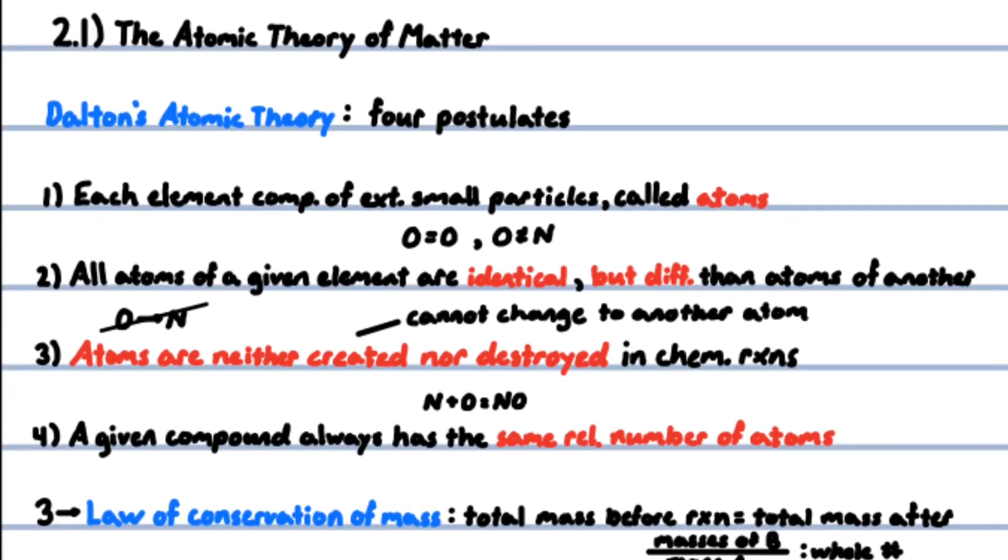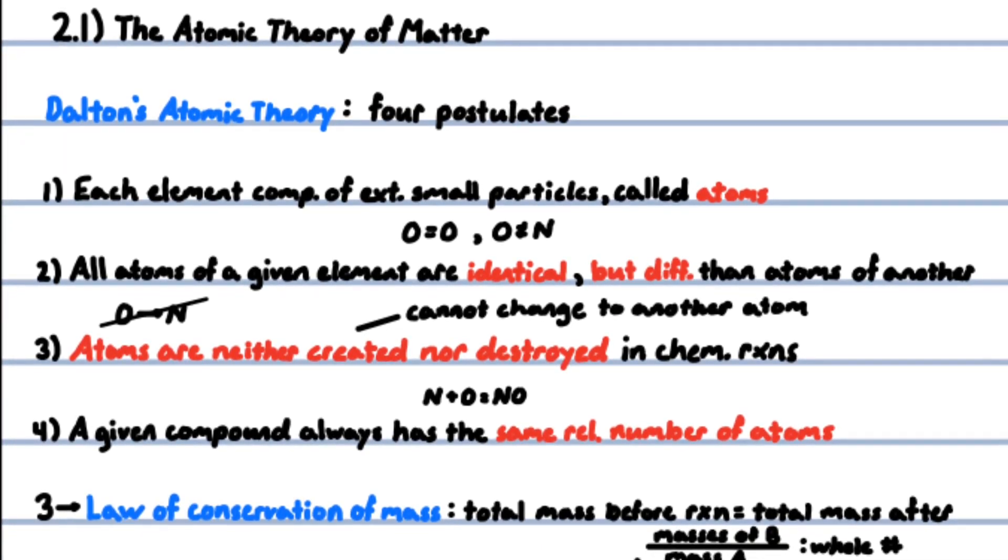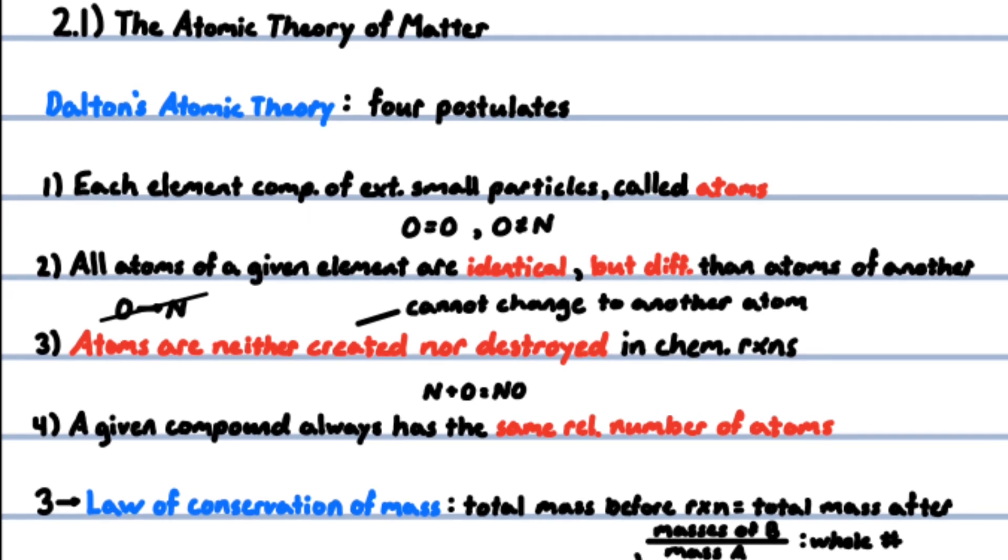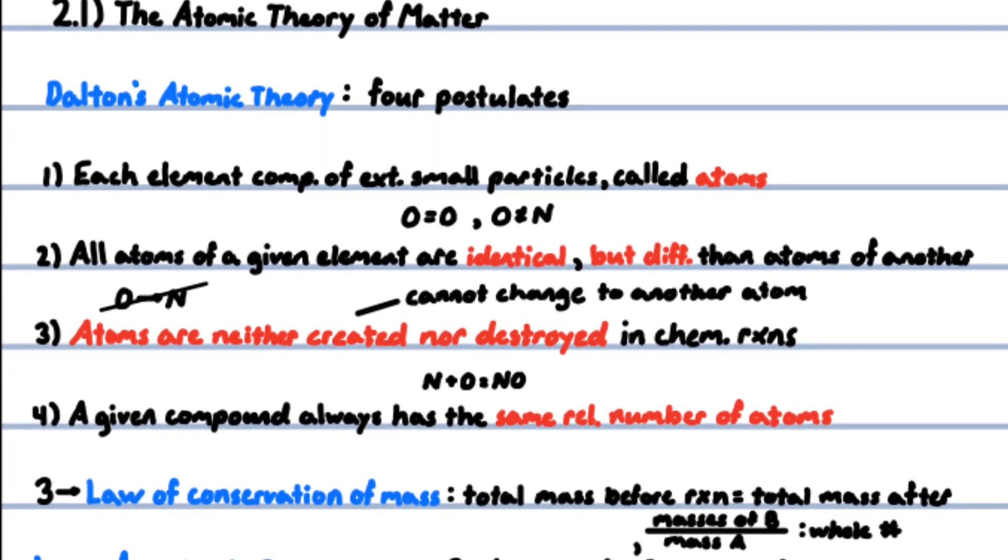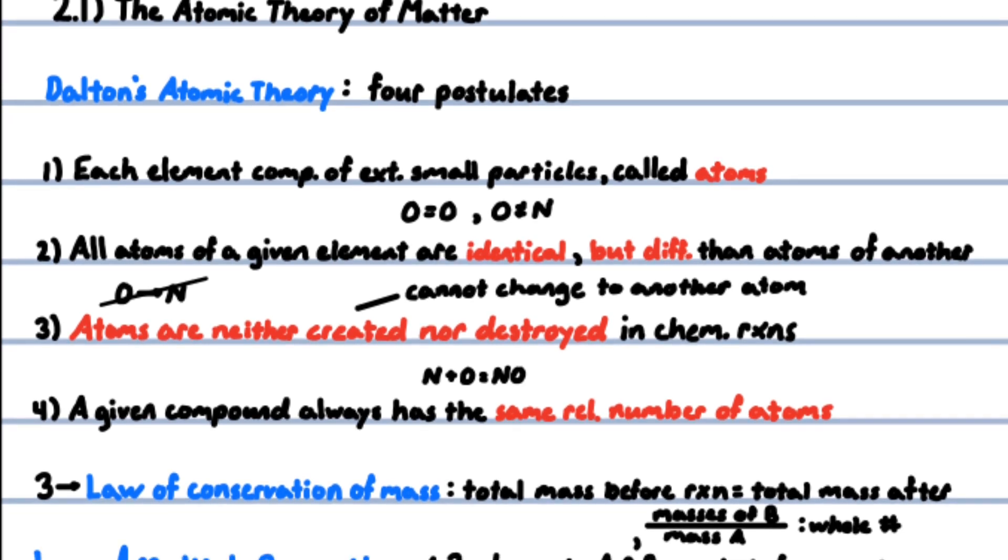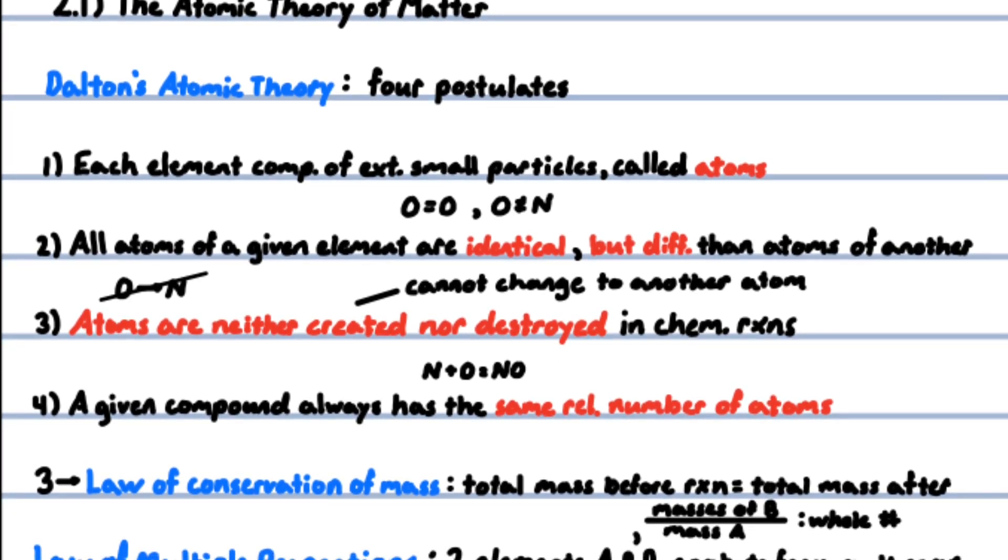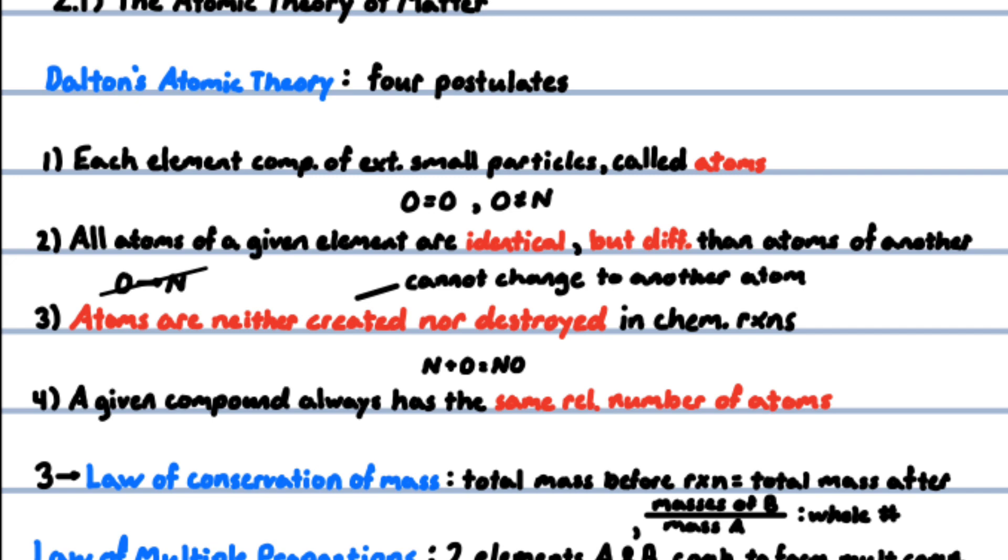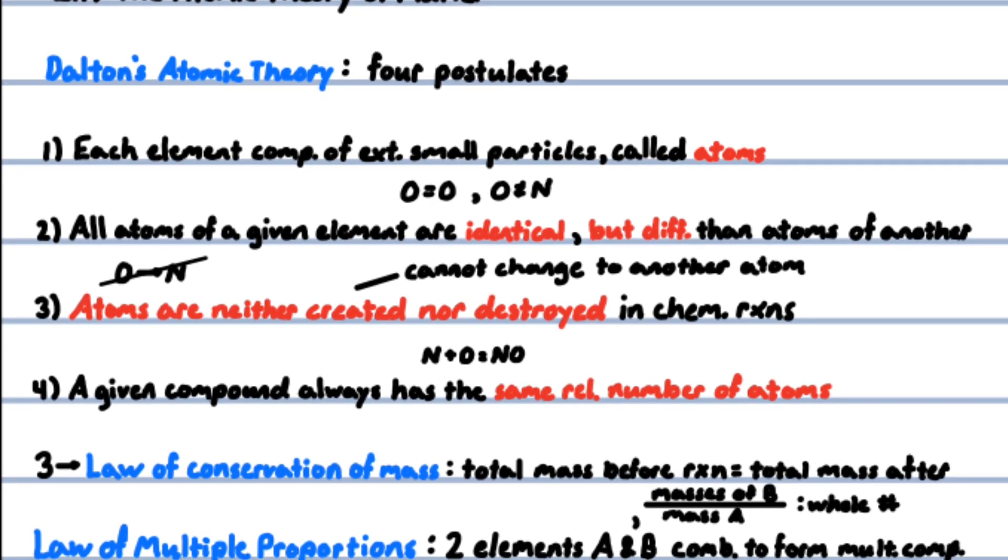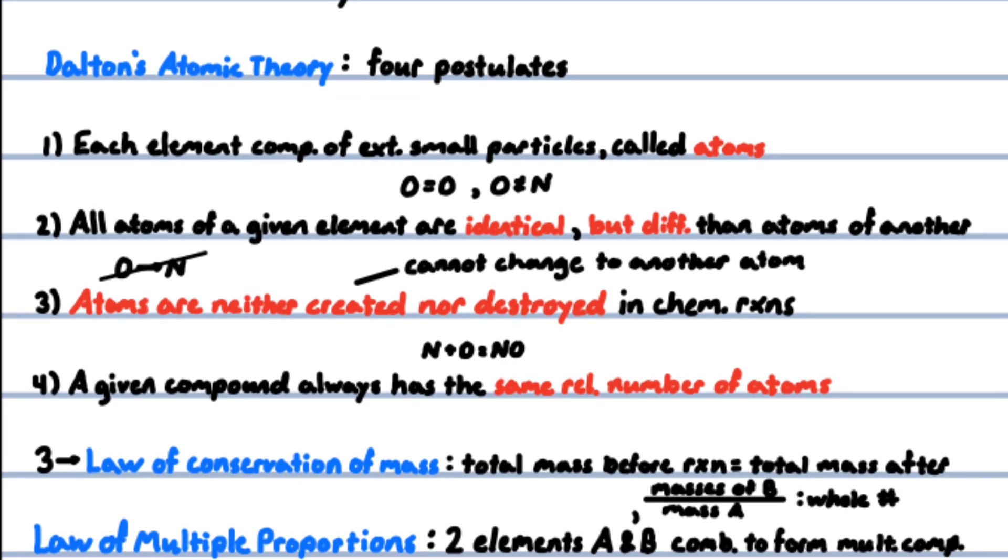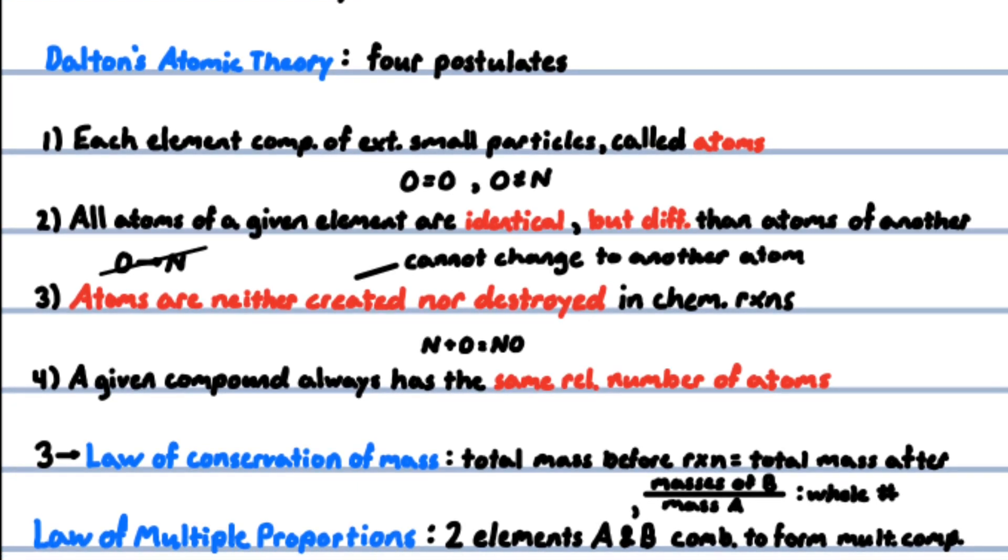Dalton's atomic theory was based on four postulates: one, each element is composed of extremely small particles called atoms; two, all atoms of a given element are identical, but atoms of one element differ from atoms of all other elements; three, atoms of one element cannot be changed into atoms of a different element by chemical reactions—atoms are neither created nor destroyed in chemical reactions; four, compounds are formed when atoms of more than one element combine, and a given compound always has the same relative number and kind of atoms.